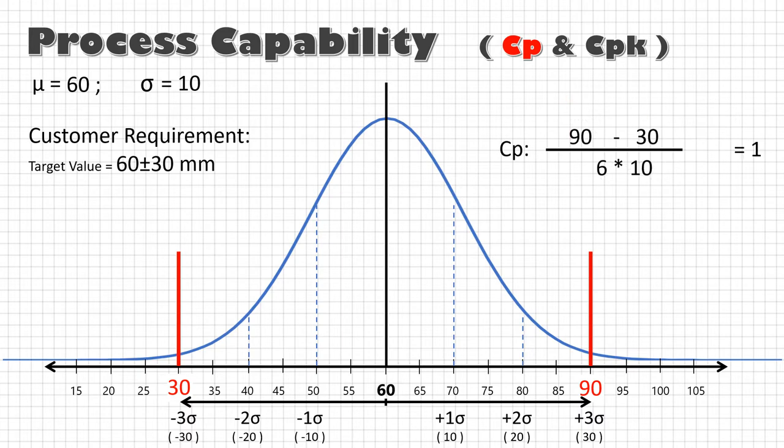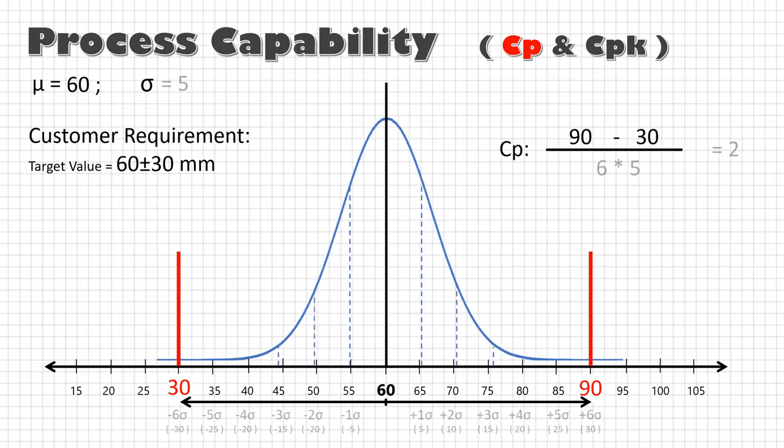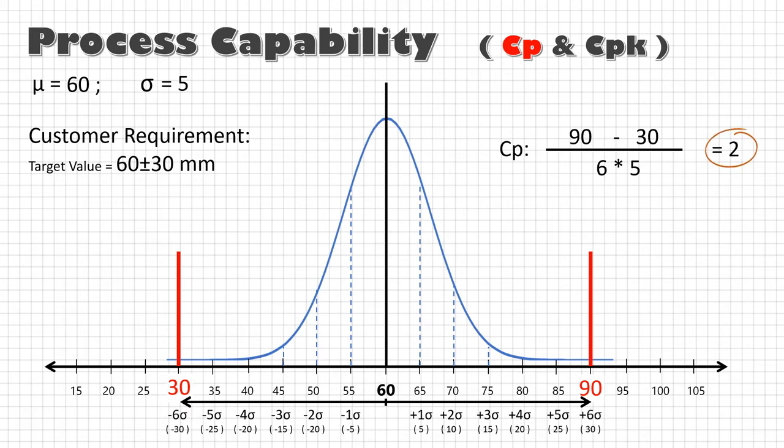So if Cp is one, that means customer tolerance is equal to plus minus three sigma. And under best condition, 99.7% of the parts will be within the maximum tolerance range. Remember area under the curve. If we reduce the spread, that is improve the process, value of sigma will decrease. So Cp will also increase. So for a five sigma process, Cp will be 1.67 and it will become two for a six sigma process.